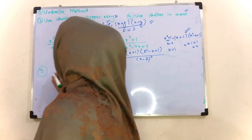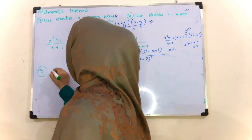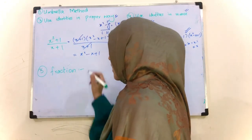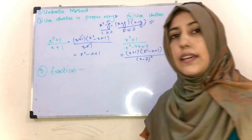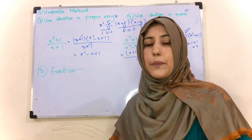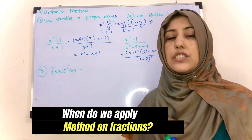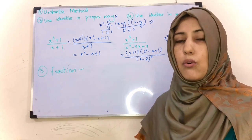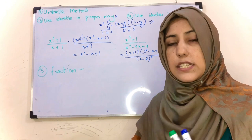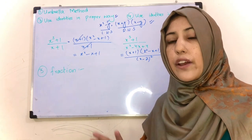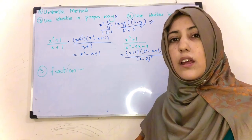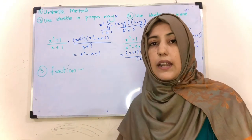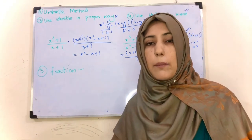Fifth method is Fraction. Ab yeh kab apply karna hai aapne - jab aapke paas algebraic expression fraction ki form mein ho, plus aur minus bhi ho, to tab hum fraction method ko use karenge. I am giving the example and I will tell you how to apply this.